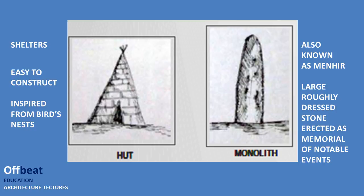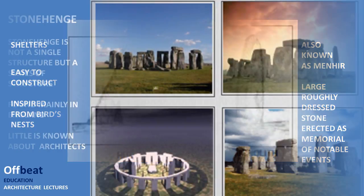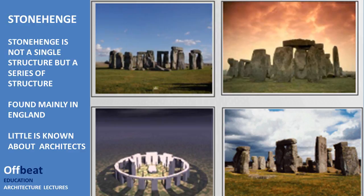Along with huts, one of the famous types of monument is the Monolith. Monolith is found in different parts of the world and it is also known as Menhir. Mono means single, and lith stands for stone. So a Monolith is a large roughly dressed stone which is erected as a memorial of notable events. Monoliths and huts are found in different areas.